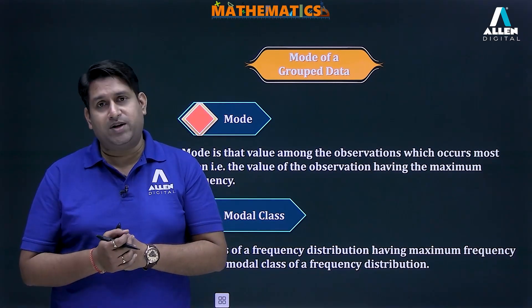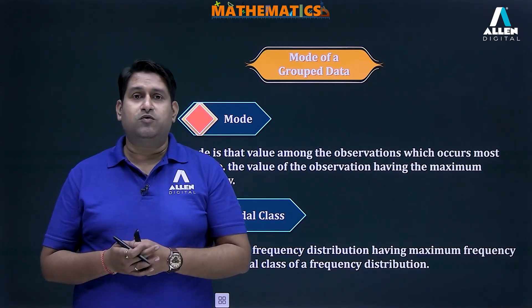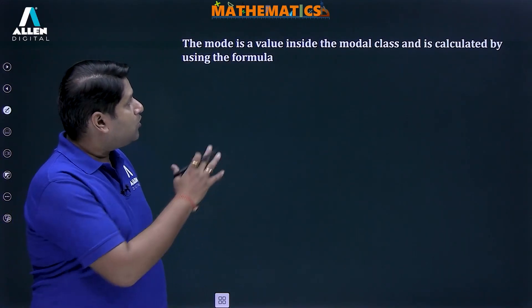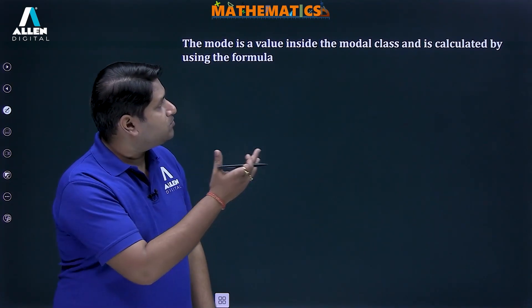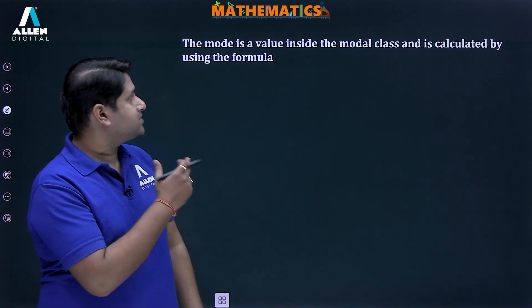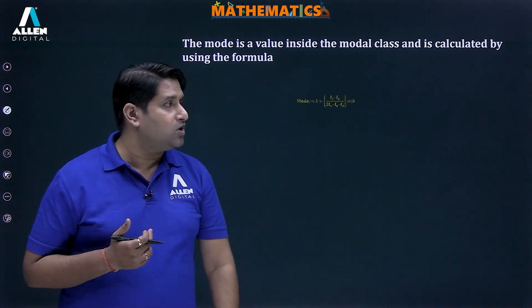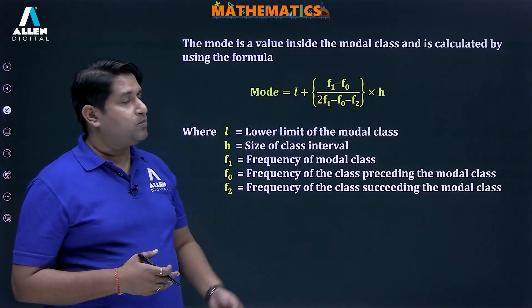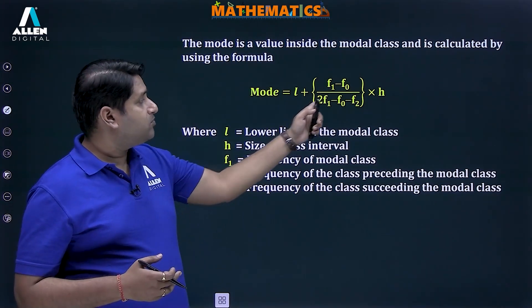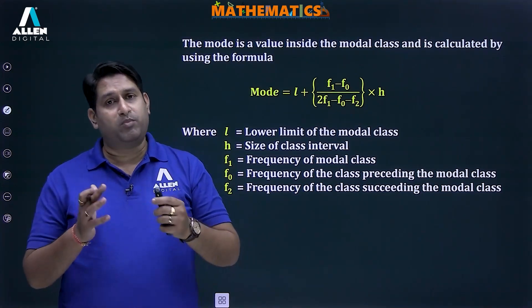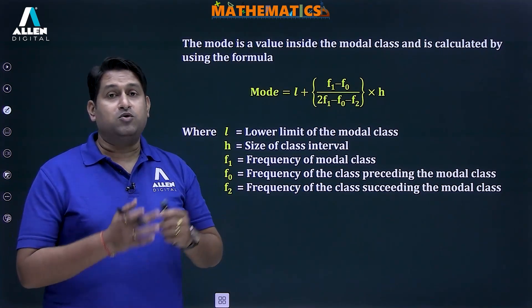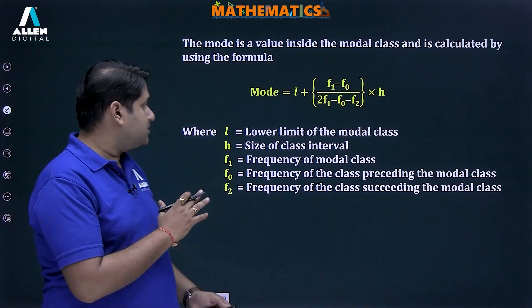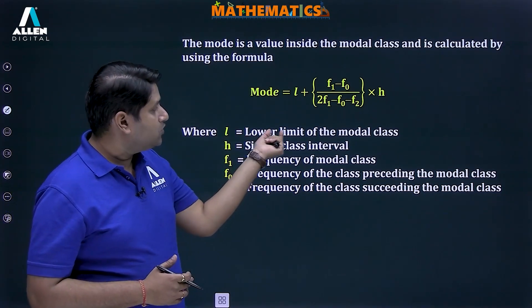The mode is a value inside the modal class and is calculated by using this formula: Mode = l + [(f1 − f0) / (2f1 − f0 − f2)] × h.